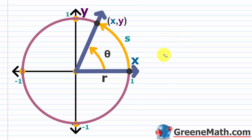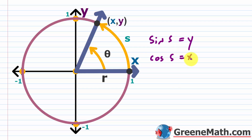You'll see in your book they'll use s instead of theta: sine of s equals y, cosine of s equals x, tangent of s equals y over x. From the reciprocal identities: cosecant of s is 1 over y, secant of s is 1 over x, and cotangent of s is x over y.